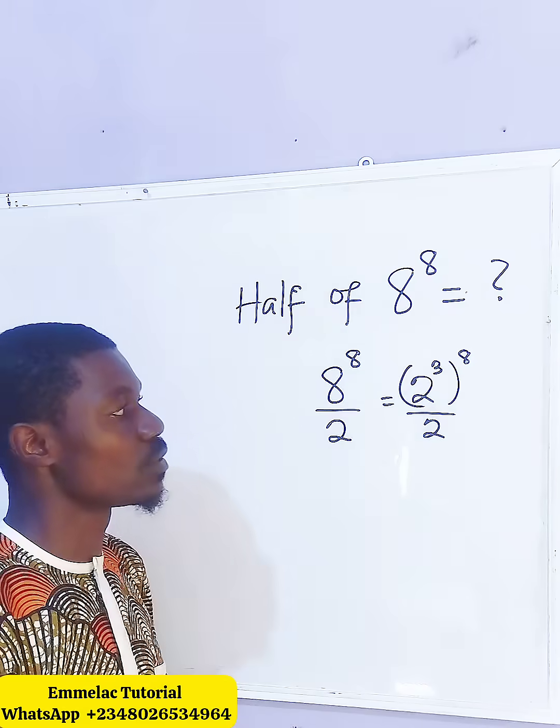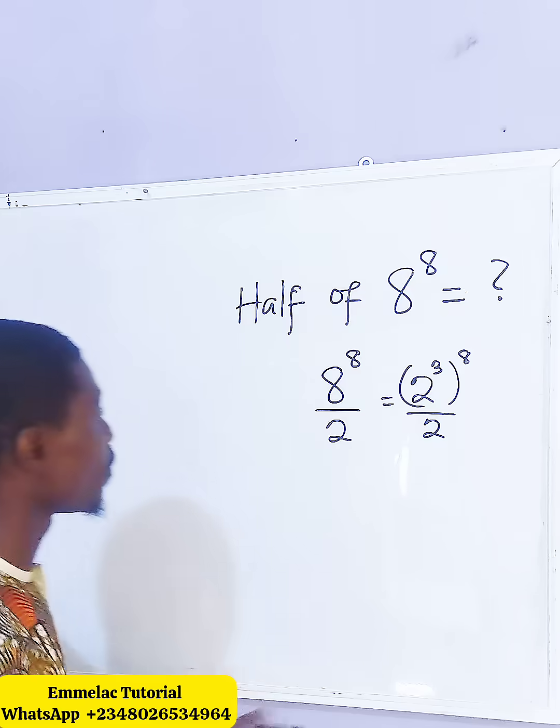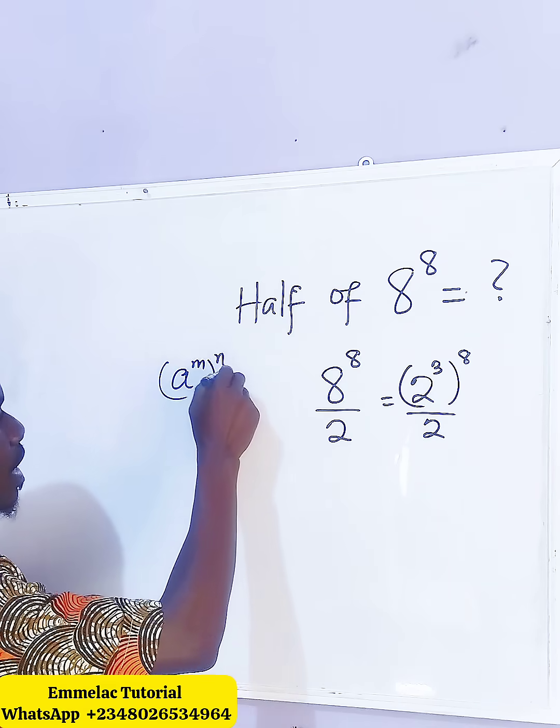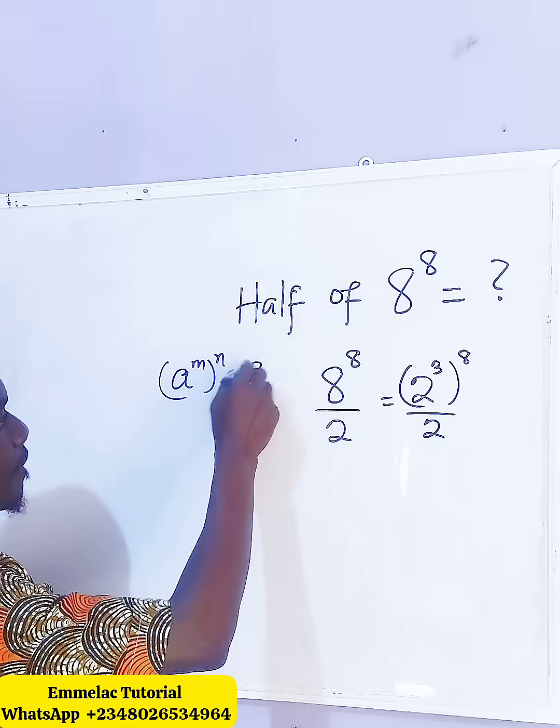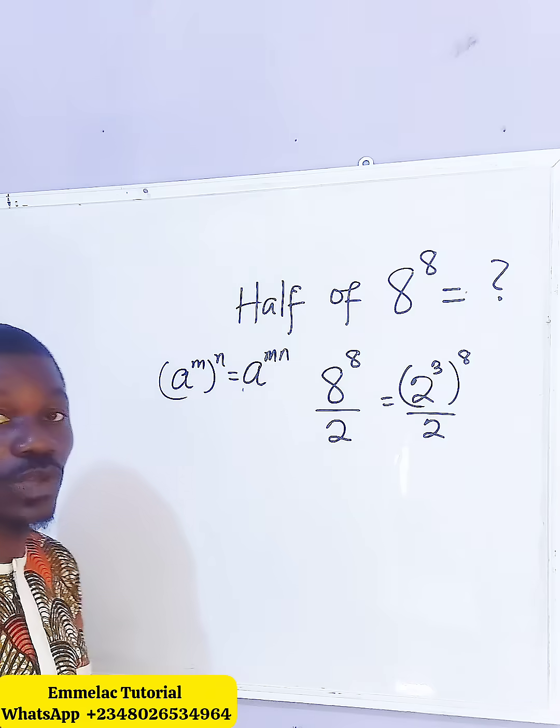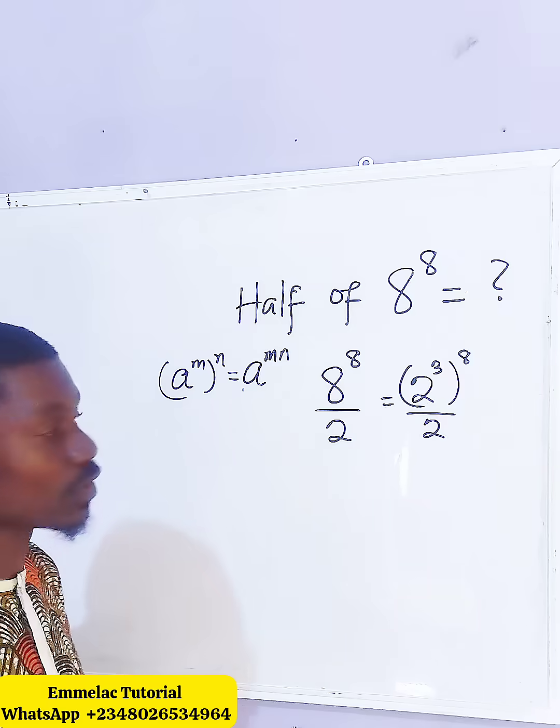So at this point, we need to multiply 3 by 8. According to the law of indices that says a raised to the power of m, all raised to the power of n, equals a raised to the power of mn, which means that the two exponents will multiply each other. So 3 times 8 will give us 24.